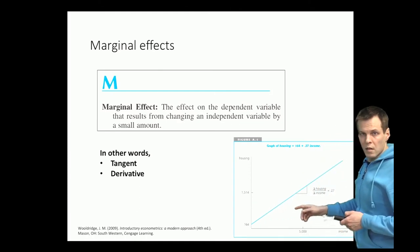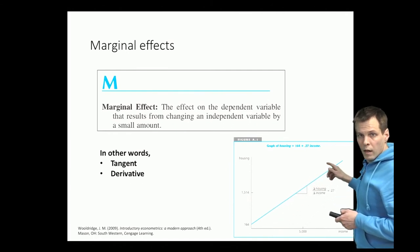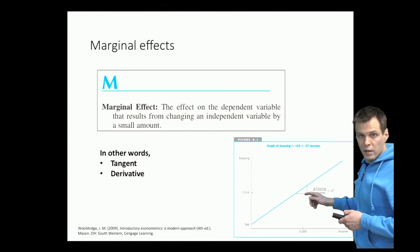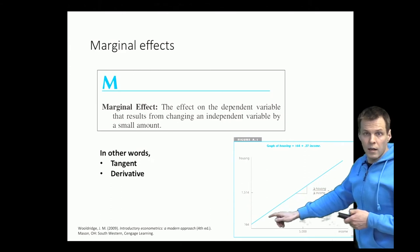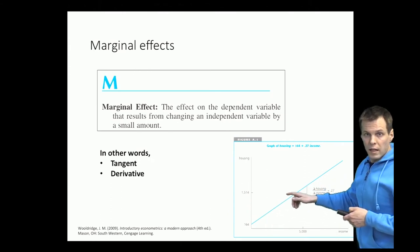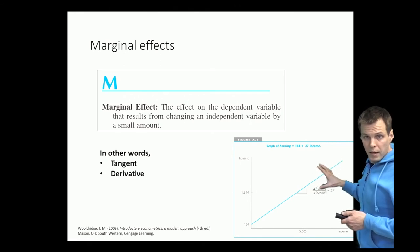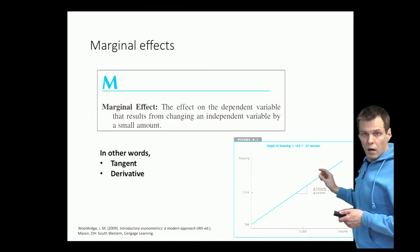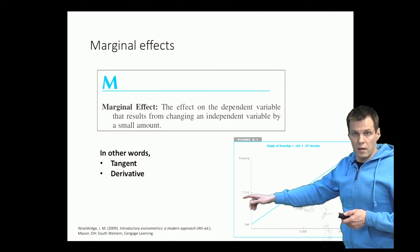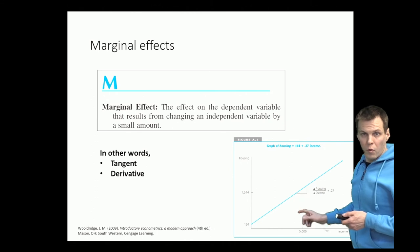Normal regression analysis gives you a line, and the marginal effect is how much y changes when x changes a little, or a very small amount, at a particular point.